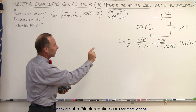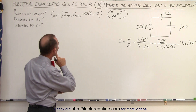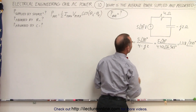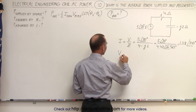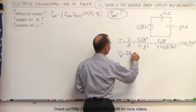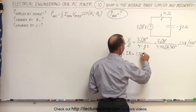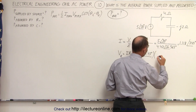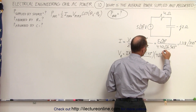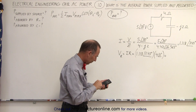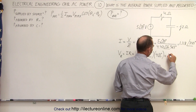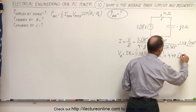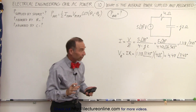Now we need the voltage across each of the three components. The voltage across the resistor is equal to the current times the resistance. The current is 1.118 with a phase angle of 3.43 degrees, multiplied by the resistance, which is 4 with a phase angle of 0 degrees. That gives us 4.47 volts with a phase angle of 3.43 degrees — that's the voltage across the resistor.